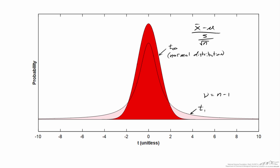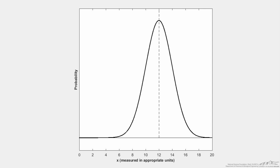To figure out where these distributions come from, I've developed simulations to show how they naturally arise. The first assumption is that all measurements come from a normal distribution. The x-axis represents whatever we're measuring — weight in kilograms, amperage or voltage in circuits, breaking strength in newtons, or chemical conversion — in whatever appropriate units you're working with. For my simulation, I've elected to use a population mean of 12 and a population standard deviation of 2.